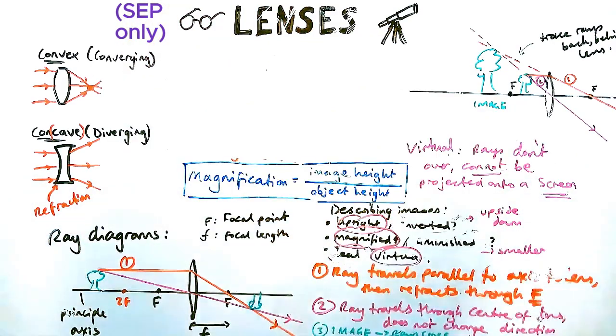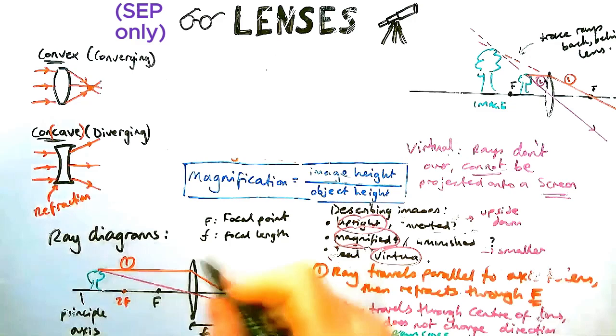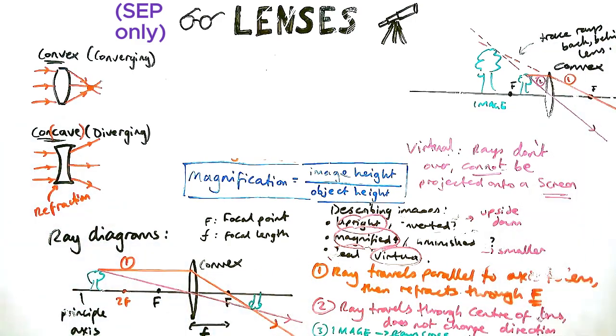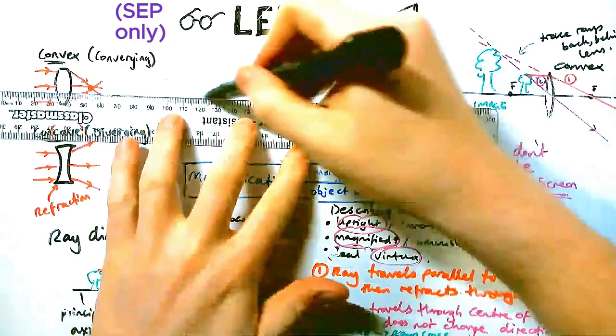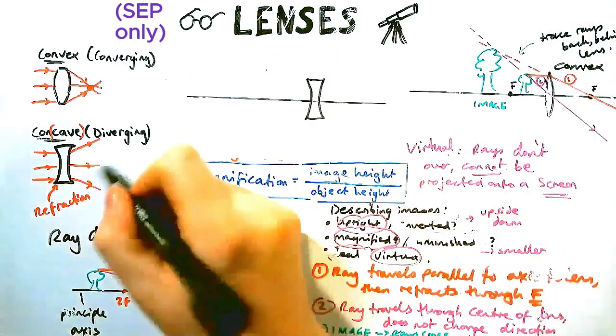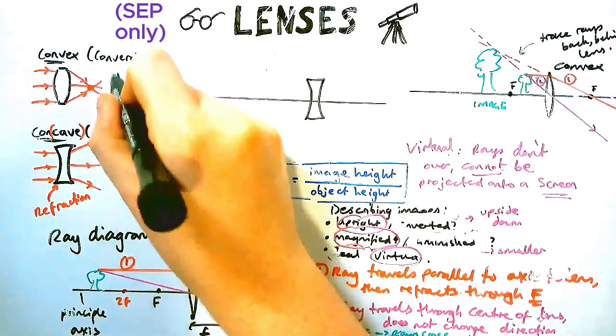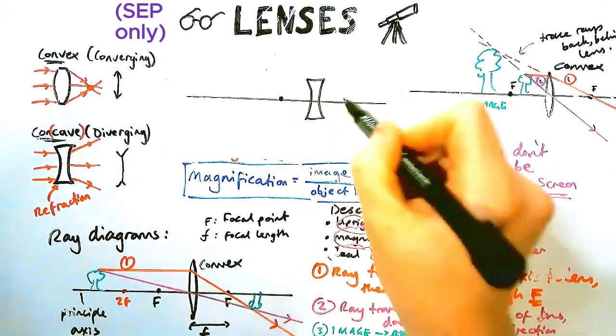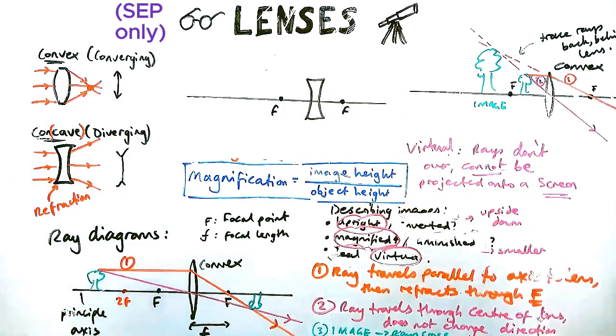Now let's talk about a concave lens or a diverging lens, which shows only one diagram you need to know. So let's set it up like before. Got my principal axis in here. I got my lens. And one thing to note as well, which I forgot to mention earlier, is the symbols. Sometimes you'd be asked to use the symbols, which those are the symbols for convex and concave.